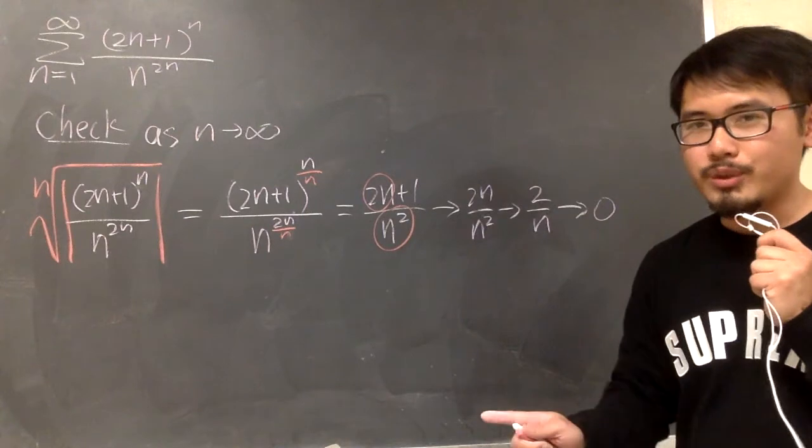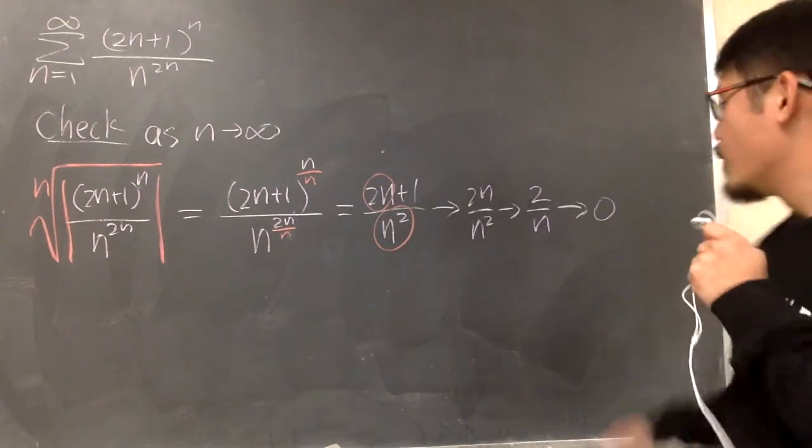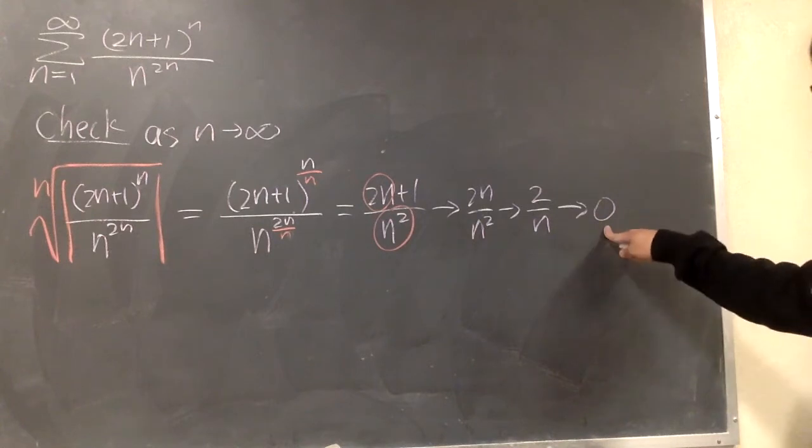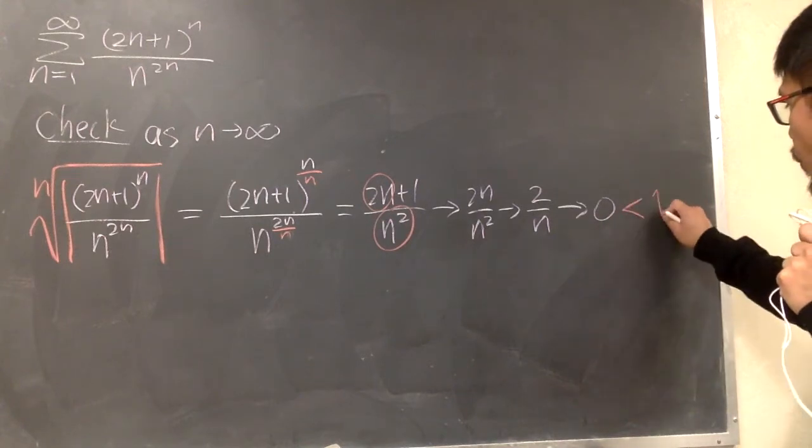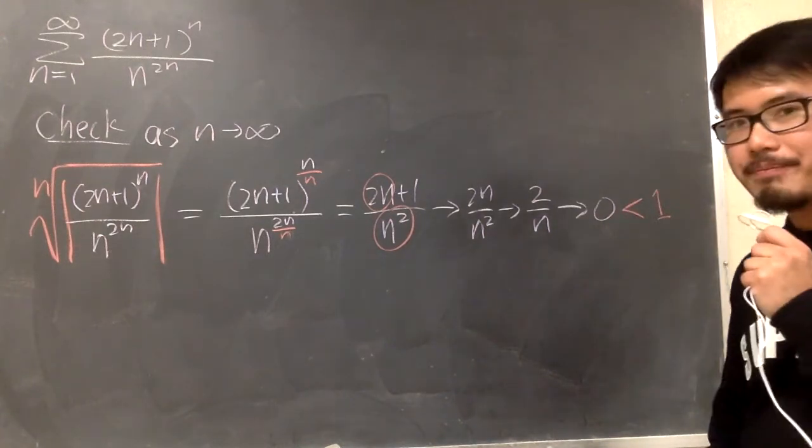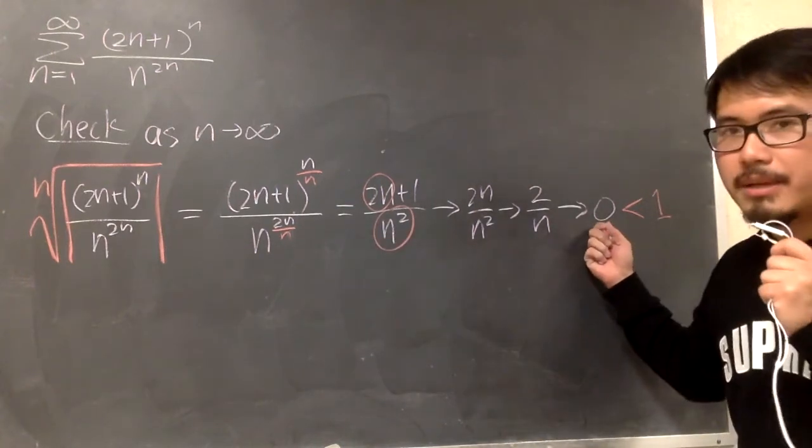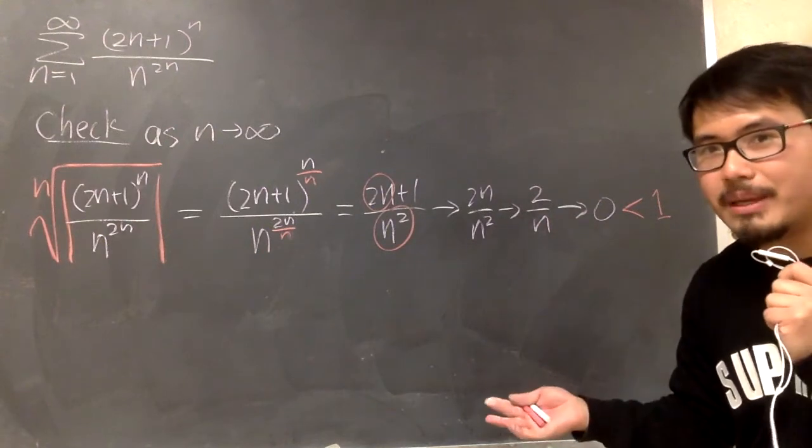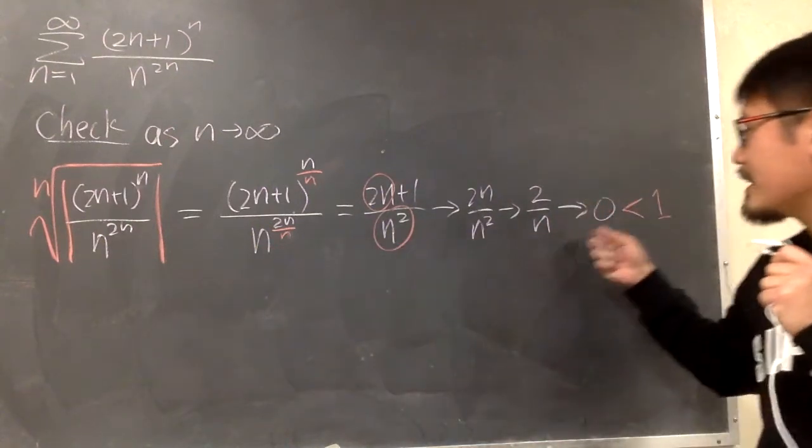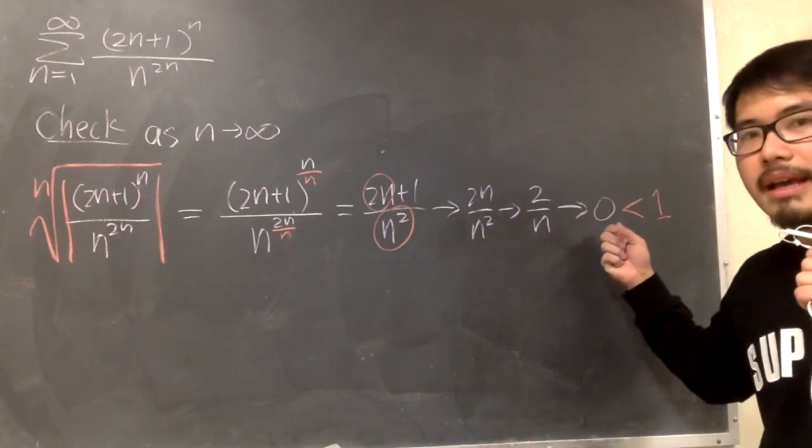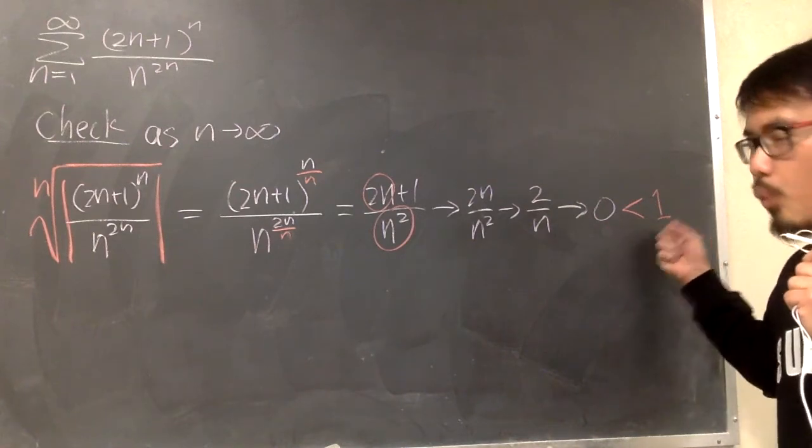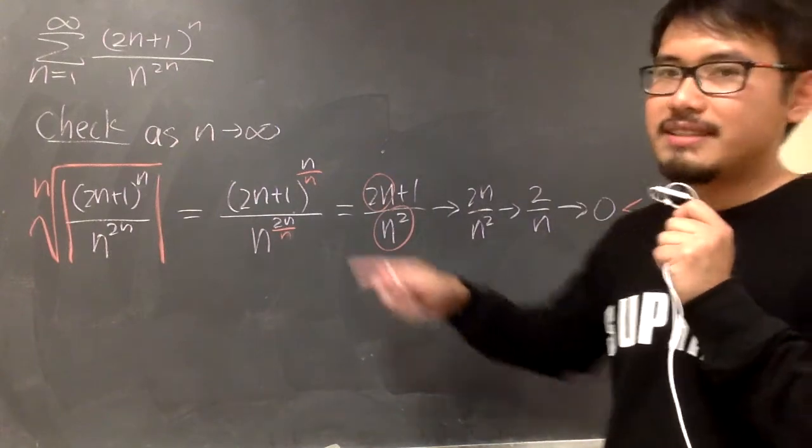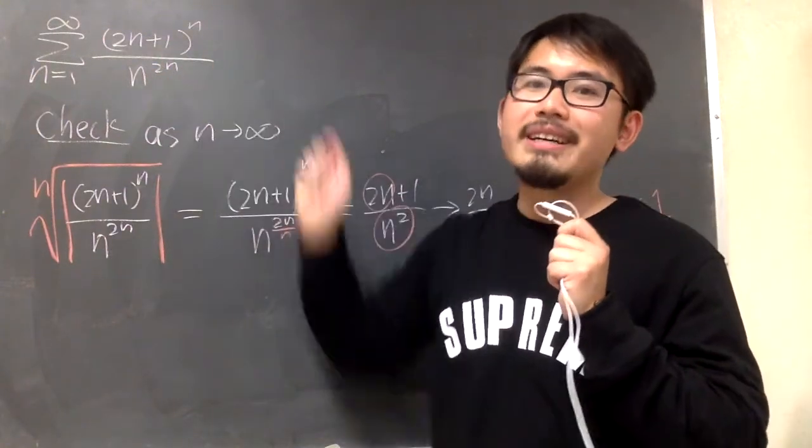When we are doing the root test, the only number that you don't want to see is 1. When you have 0, this is good. You have to tell me 0 is less than 1. If you end up, right here, the limit is 1, then the root test is inconclusive. But then, the limit right here that we got is 0, and 0 is less than 1. That's good. And we can say that by the root test, the original series converges.